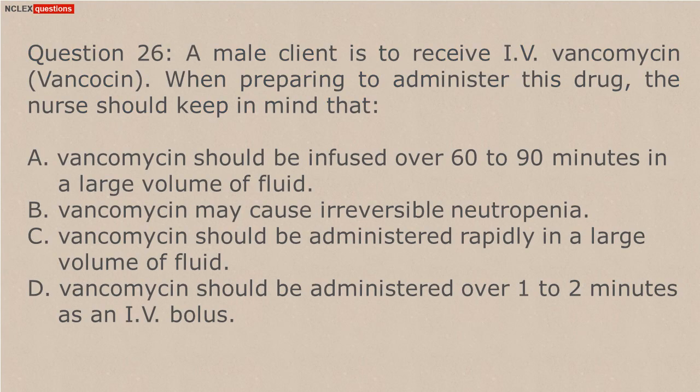A positive reaction means the client has been exposed to TB. It isn't conclusive of the presence of active disease. A positive reaction consists of palpable swelling and induration of 5 to 15 millimeters. It can be read 48 to 72 hours after the injection. In clients with positive reactions, further studies are usually done to rule out active disease. In immunosuppressed clients, a negative reaction doesn't exclude the presence of active disease.